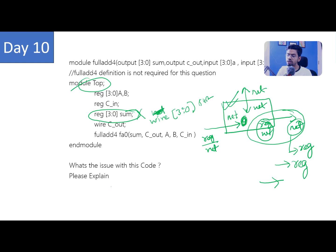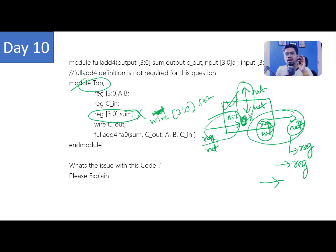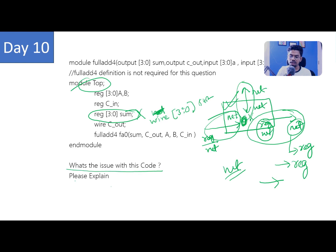That's why the rule in Verilog is: whenever you connect an output port to the outside world, the outside variable must be net type. In the top module, sum is reg type — we need to change it to wire, like 'wire [3:0] sum'. A net type is always ready to accept values anytime, unlike a reg which depends on control signals. The same logic applies to input side: if inside the module a reg isn't ready, you lose incoming input.